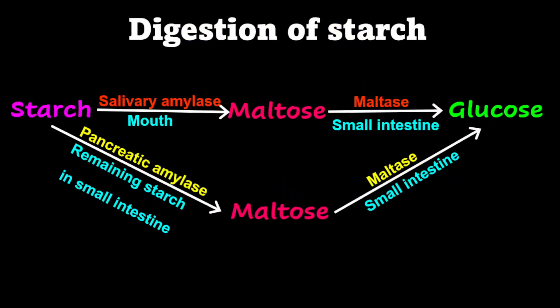A summary of the entire process: starch from the mouth is digested by salivary amylase into maltose. Maltose travels to the small intestine and is acted upon by maltase to form glucose. Excess starch from the mouth is acted upon by pancreatic amylase, converting it into maltose, which is then acted upon by maltase to give more glucose molecules.